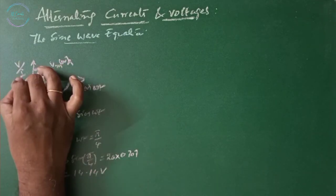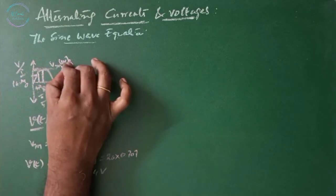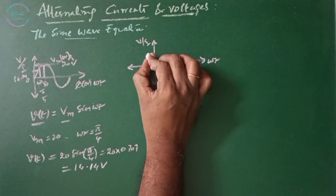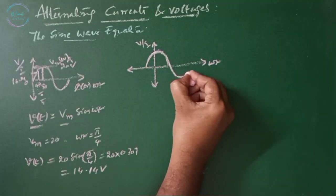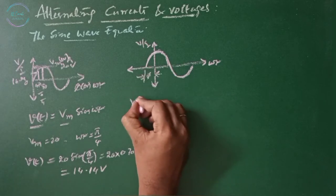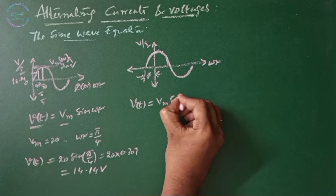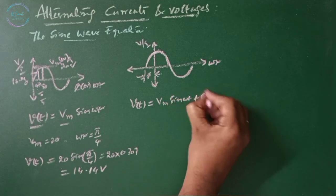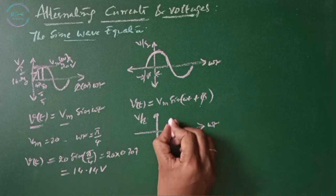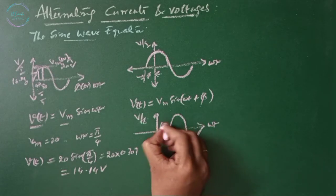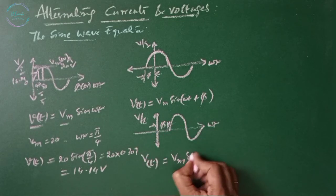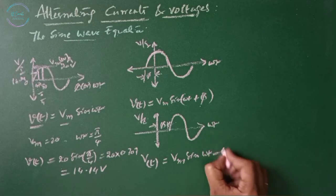The value is 14.14 V if the peak value is 20 volts. When the sine wave is shifted towards the left by an angle phi, the instantaneous value V(t) is given by Vm sine(omega t + phi). If the sine wave is shifted towards the right by an angle phi, then the instantaneous value V(t) is given by Vm sine(omega t − phi).